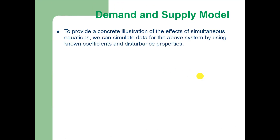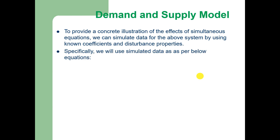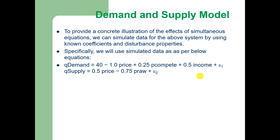To provide a concrete illustration of the effects of simultaneous equations, we use simulated data for the above system with known coefficients and disturbance properties. In this lecture, the demand equation has a constant of 40, a price coefficient of minus 1, a substitute price coefficient of 0.25, and an income coefficient of 0.5, with error term epsilon 1. In the supply equation, 0.5 is the coefficient of price, minus 0.75 is the coefficient of price of raw material, and epsilon 2 is the error term.